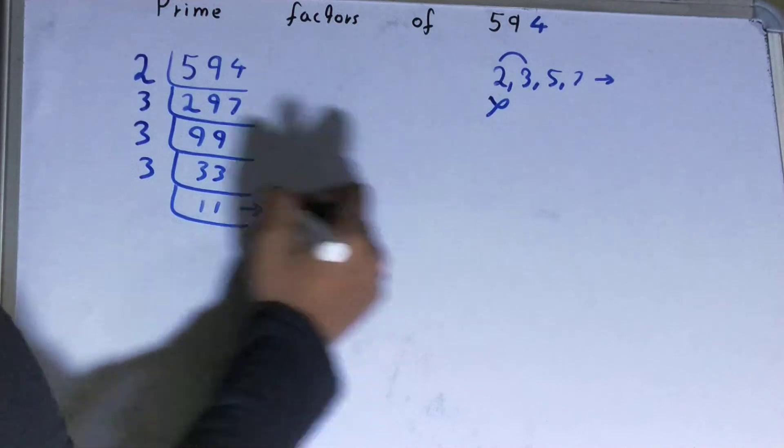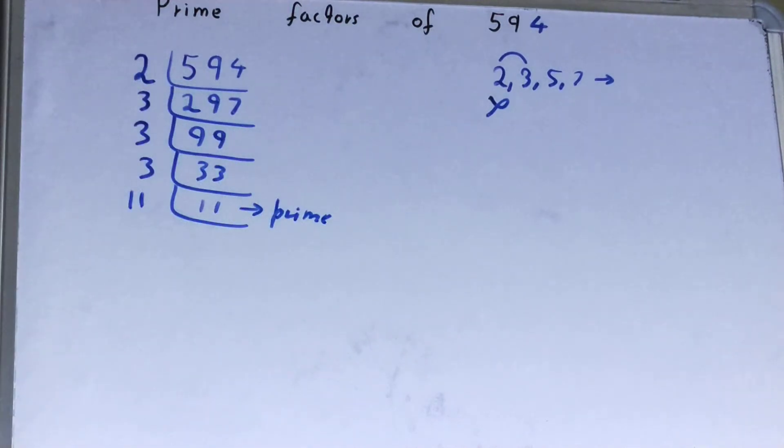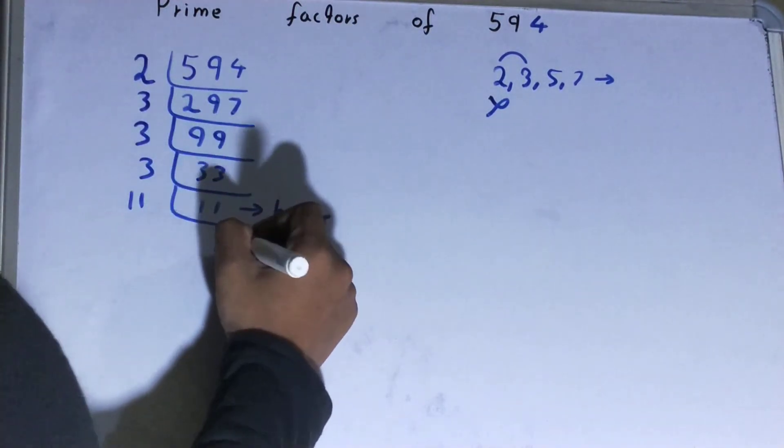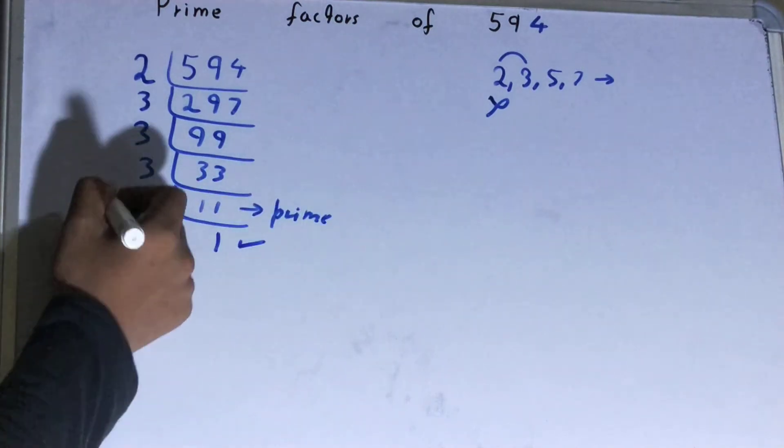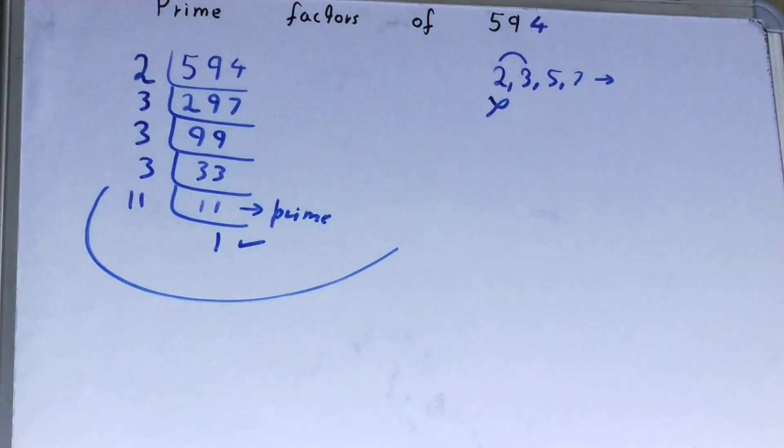So 11 is only divisible by itself, and when you do so you will get 1. Once you get 1, the work is done. Whatever you have on the left-hand side will be the prime factors.